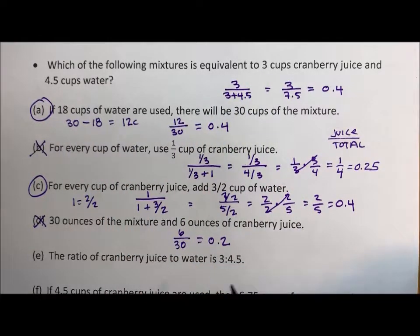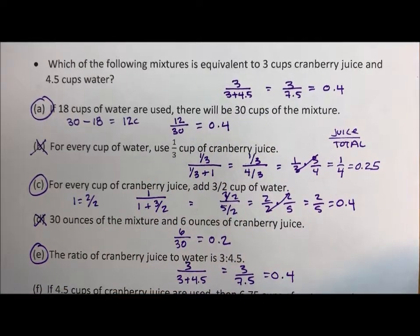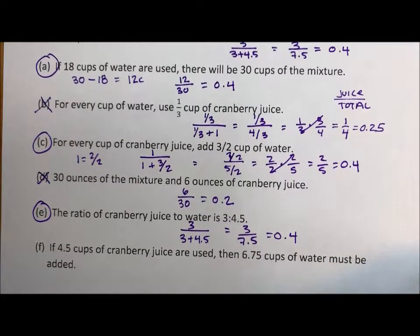The ratio of cranberry juice to water is 3 to 4.5. That looks the same but if we do our fraction, cranberry juice to water, 3 to 7.5, that's 0.4. All right that one works quite nicely.